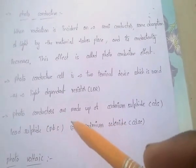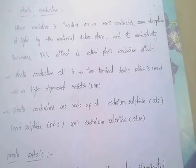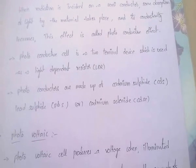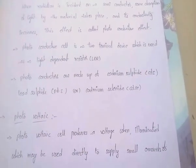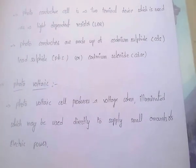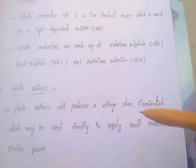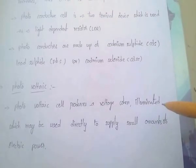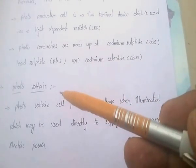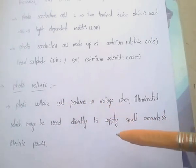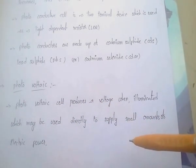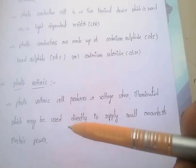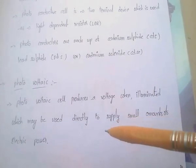Photovoltaic devices produce a voltage when illuminated. These photovoltaic devices may be used directly to supply small amounts of electric power.